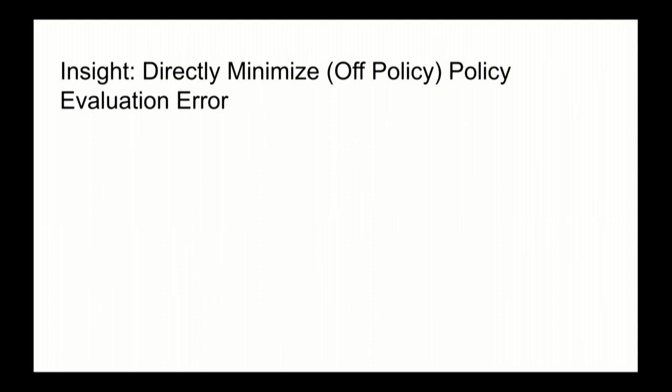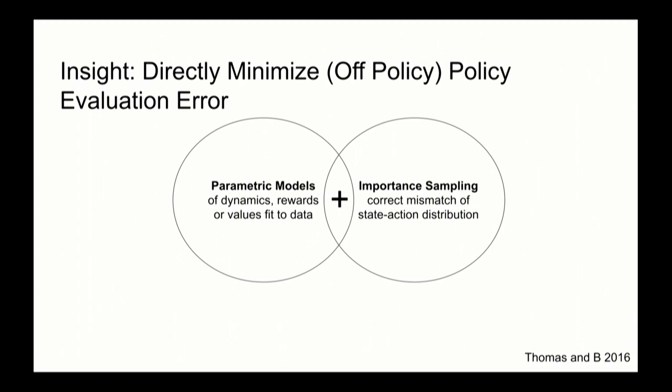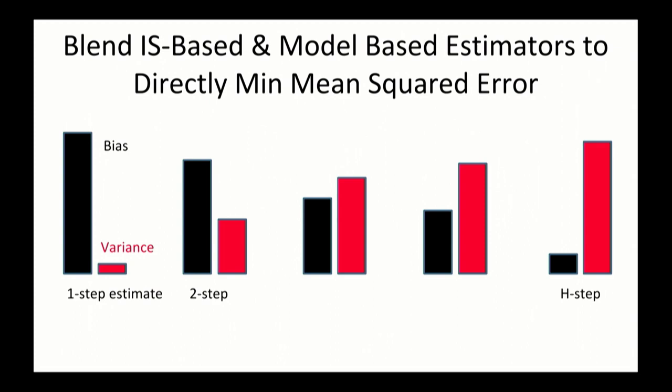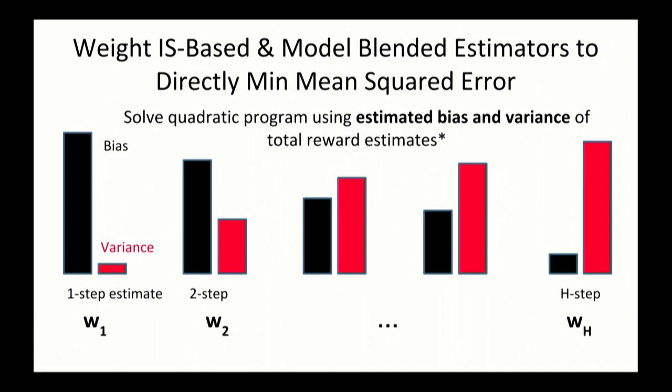But the insight that we had in my group was to say, well, we think about bias and variance and really what we often want to do is to combine between both of those. What we really want is good estimates of a policy before we deploy it so we can know whether or not we're going to run it. A natural idea is how do we combine between these different forms of estimators in a way that's going to allow us to get good estimates of the value of a policy. This is work with my former postdoc Phil Thomas. The idea is that we can blend between these different estimates. So you could do something like estimate one step with a model and most steps with, or one step with importance sampling, most steps with a model and that would be low variance but high bias. Or you could trade this off in terms of how much you're using your model versus how much you're using importance sampling. What we ended up doing is phrasing this directly as a quadratic program where we think about weighting these different forms of estimates in order to try to directly minimize the mean squared error.